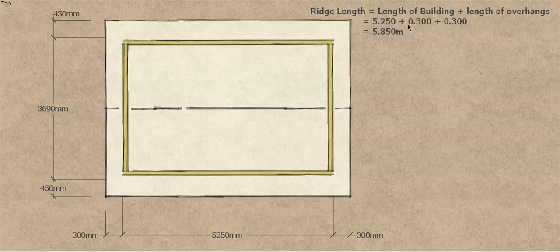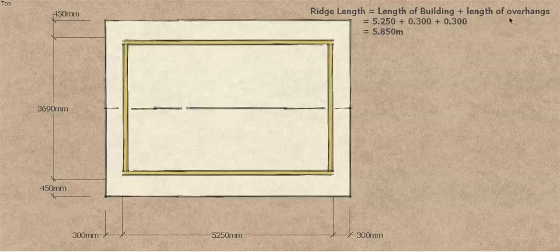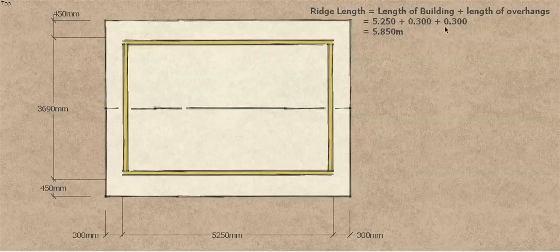For a gable roof, all we do is add the length of the building plus the length of the two overhangs. So 5m 250 plus 0.3 plus 0.3 gives us a ridge length of 5m 850.